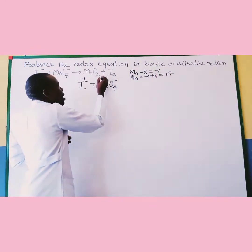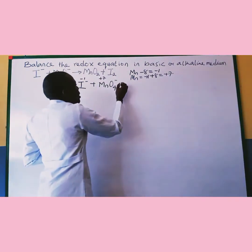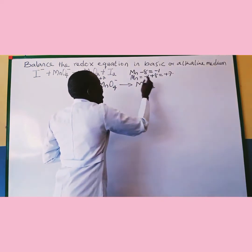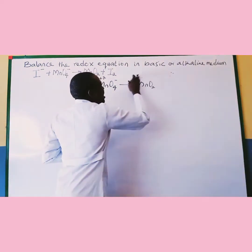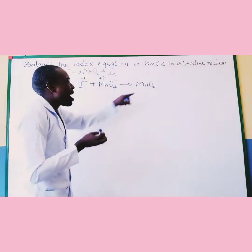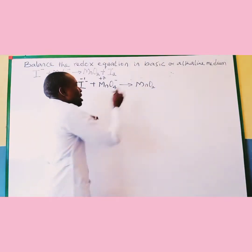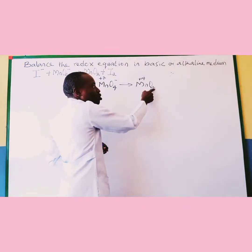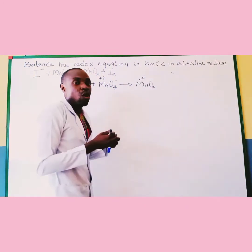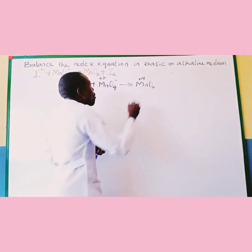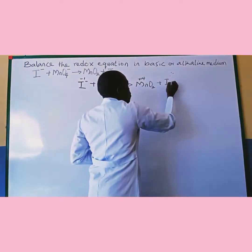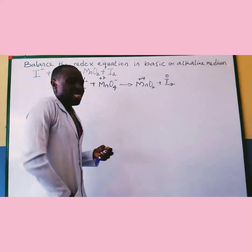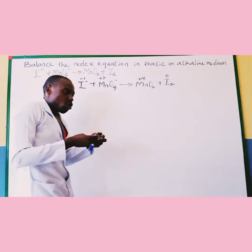So here is plus 7 for the manganese. Then we move to the product MnO2. The oxidation state of manganese in this oxide is plus 4, because minus 2 times 2 is minus 4, and when it crosses the equality side it turns to plus 4. And for the iodine, we assign 0.